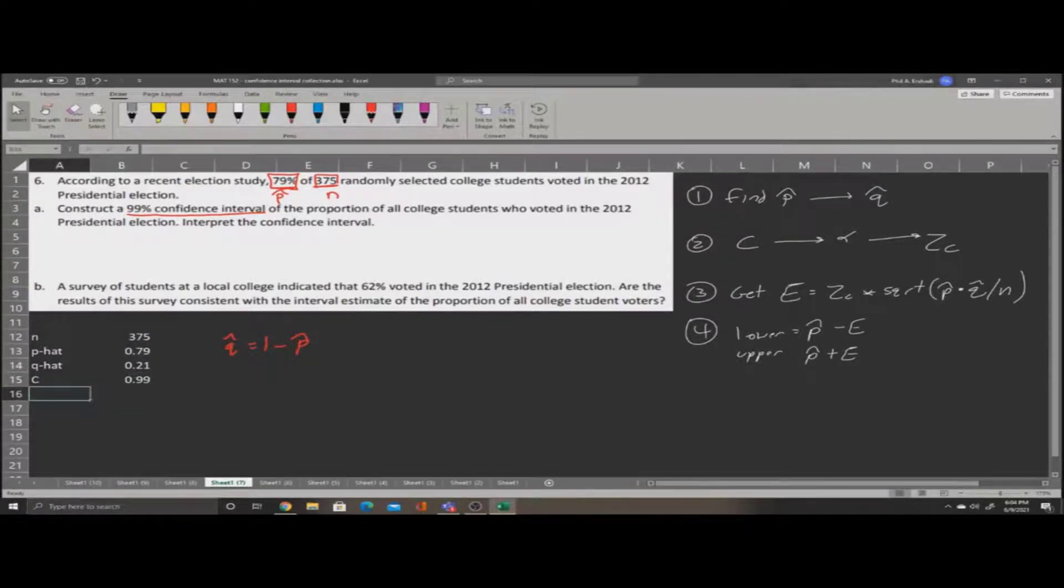Now our confidence level is 0.99. Based on that, we can get alpha. Now, alpha is 1 minus confidence. So in alpha, we'll say equals 1, subtract, and then click on the confidence level. This gives us 0.01.